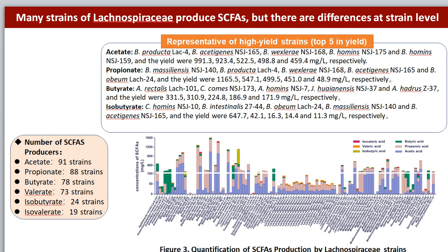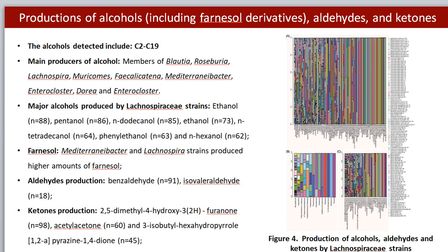Short-chain fatty acids have been enormously reported as health-relevant metabolites, and determination of them is of great importance. As shown in Figure 3, we found that many Lachnospiraceae strains produce different SCFAs, and strains of Agathobacter and Blautia and Coprococcus produce higher amounts of SCFAs. Yields of SCFAs diverged among genera and species.